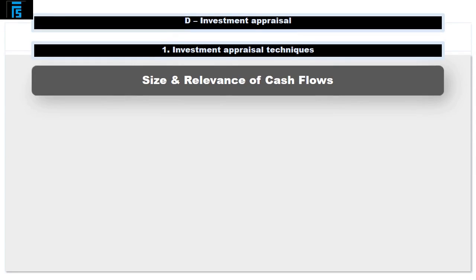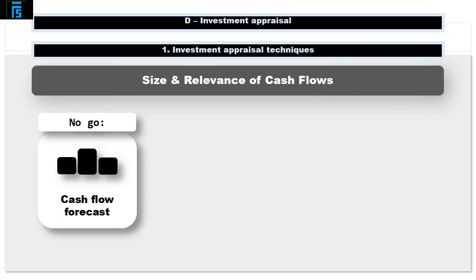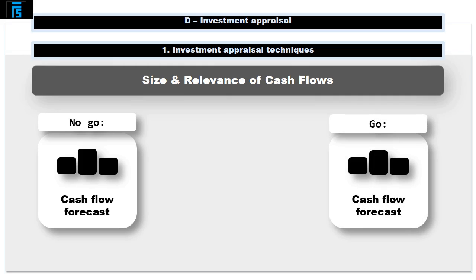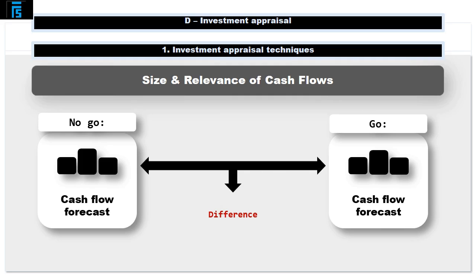A good mental image to maintain when trying to decide on the size and relevance of a future incremental cash flow is as follows. Imagine a cash flow forecast of the business if you don't go ahead with the decision you are considering. And then, next to it, imagine a cash flow forecast of the business if you do go ahead with the decision. Anywhere there's a difference between those two cash flow forecasts, the size of that difference is the relevant cash flow.